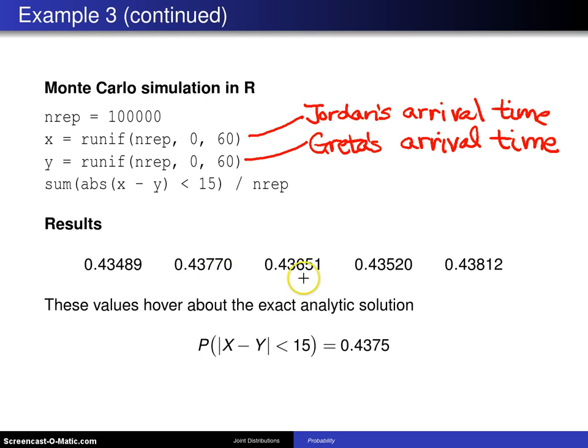Notice that these numbers are hovering about the analytic solution, which is 0.4375, some a little bit higher and some a little bit lower. And from that we can conclude that our Monte Carlo simulation supports the analytic solution.